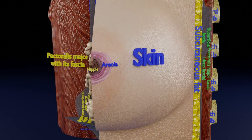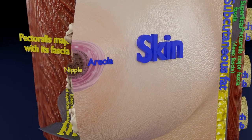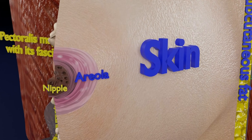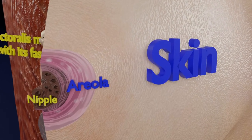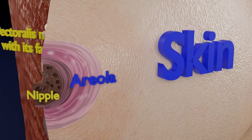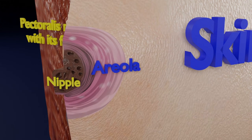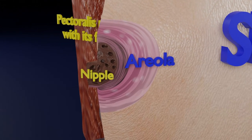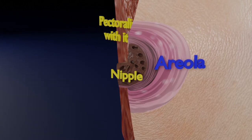Now you are able to see the nipple. The nipple is surrounded by a pigmented circular region of skin called the areola, which becomes even more pigmented and prominent during puberty. The areola shows small punctual elevations on its surface, which are produced by many areolar glands.